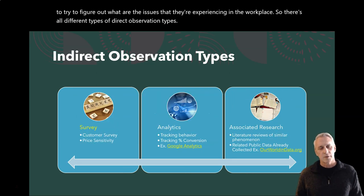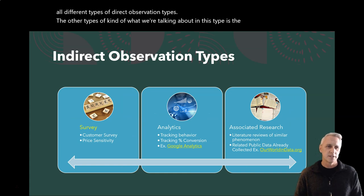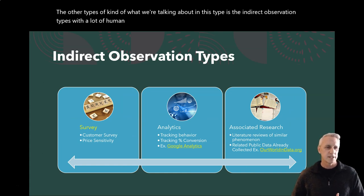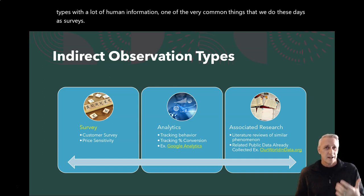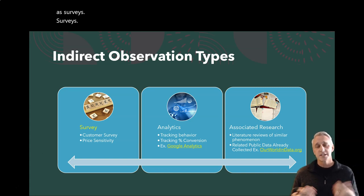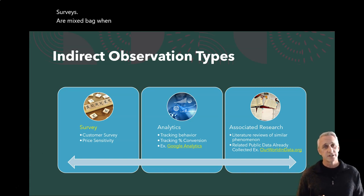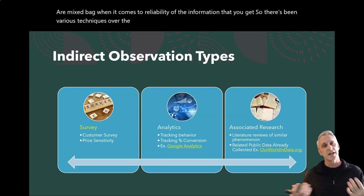So there are all different types of direct observation. The other types are indirect observation types. With a lot of human information, one of the very common things that we do these days is surveys. Surveys are a mixed bag when it comes to reliability of the information that you get. There have been various techniques over the years to try to extract better information from surveys and to improve how you actually construct them.